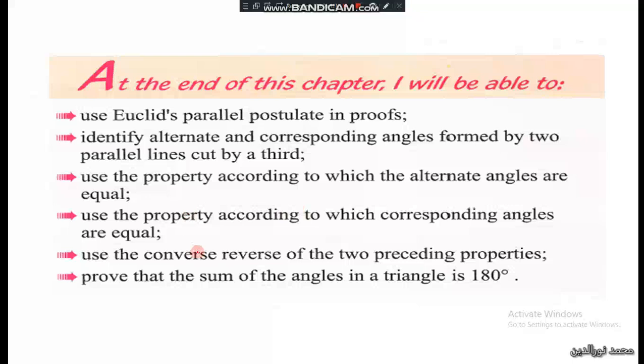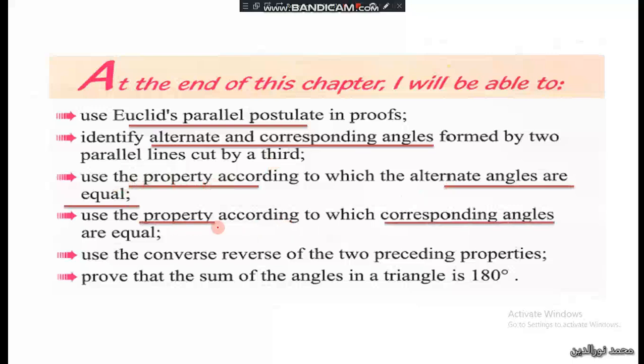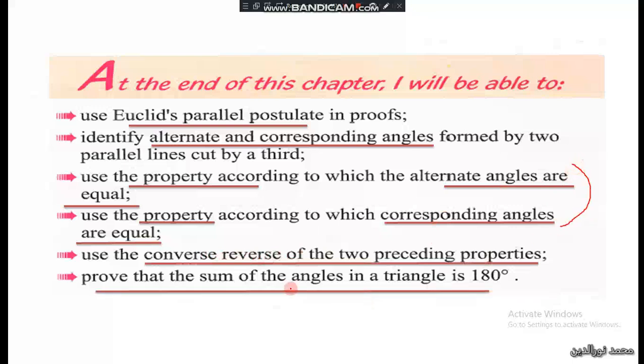At the end of this chapter, I will be able to use Euclid's parallel postulates, identify the alternate and corresponding angles formed by two parallel lines cut by a third, use the property according to which the alternate angles are equal, use the property according to which the corresponding angles are equal, use the converse reverse of the two preceding properties, and prove that the sum of the angles of a triangle is 180 degrees.